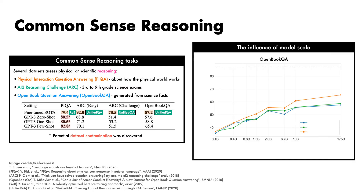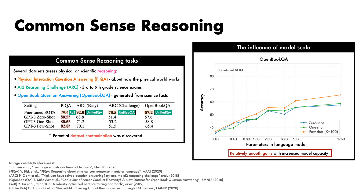Returning to the influence of model scale, this plot depicts performance on the Open Book QA benchmark with the number of parameters in the language model on the x-axis and accuracy on the y-axis. The grey-dashed line shows the fine-tuned state-of-the-art set by UnifiedQA. We show zero-shot performance in blue, one-shot performance in green, and few-shot performance with k equals 100 in orange. On this common-sense reasoning task, we observe relatively smooth gains in performance with increased model capacity.